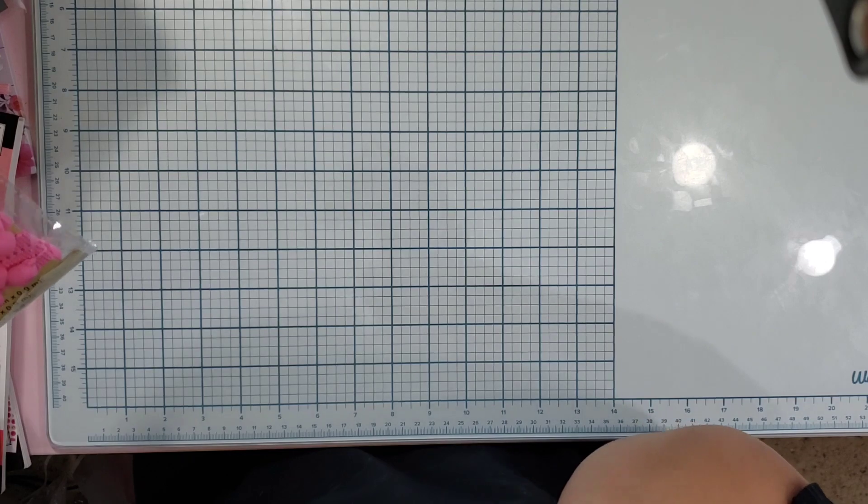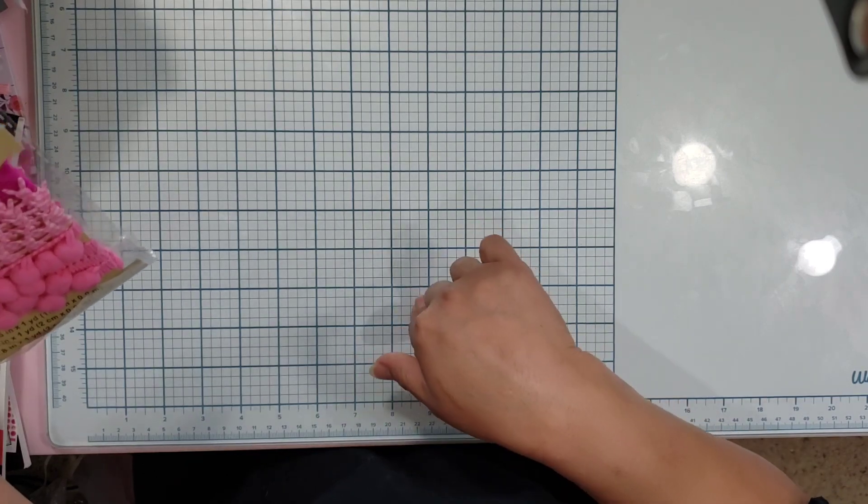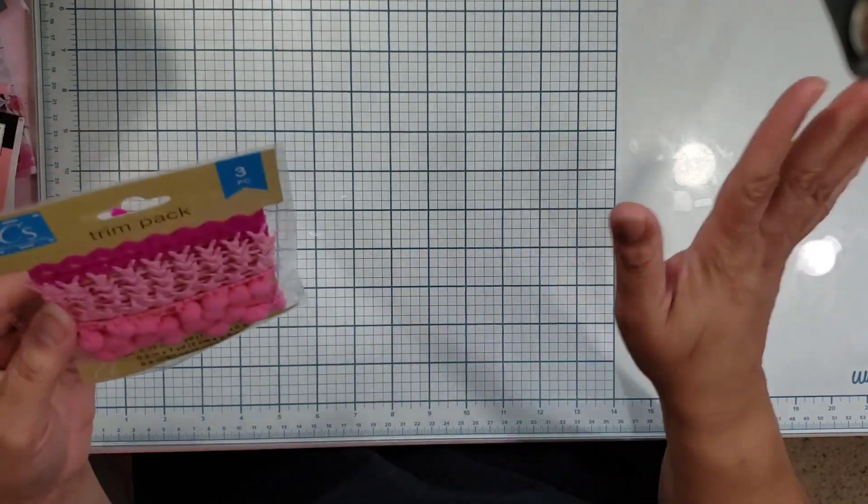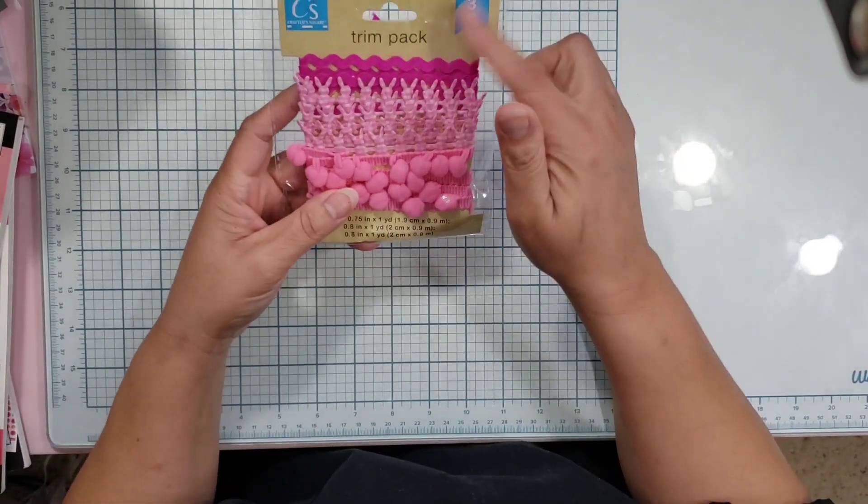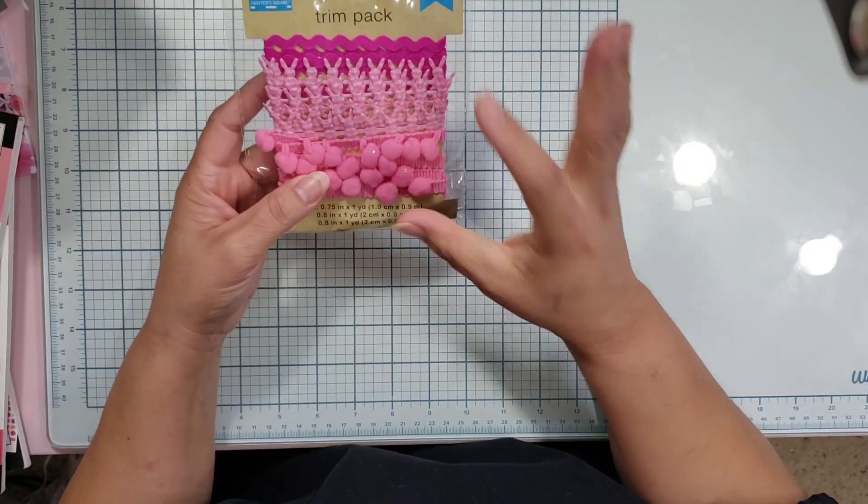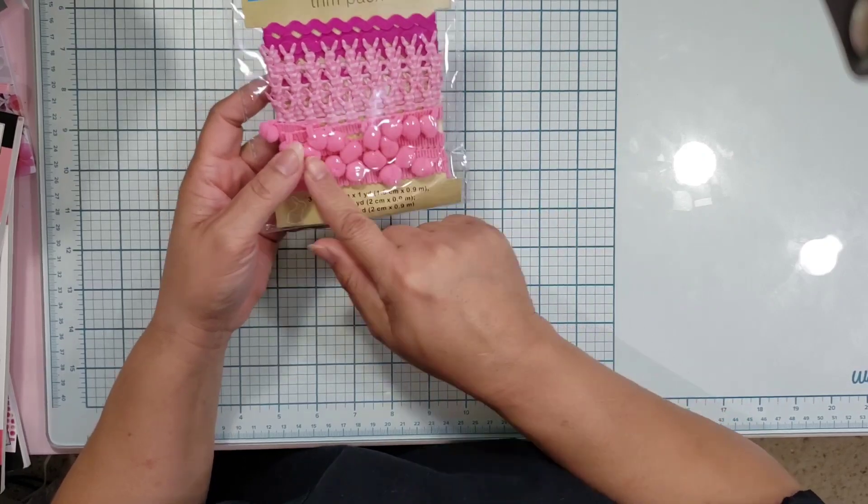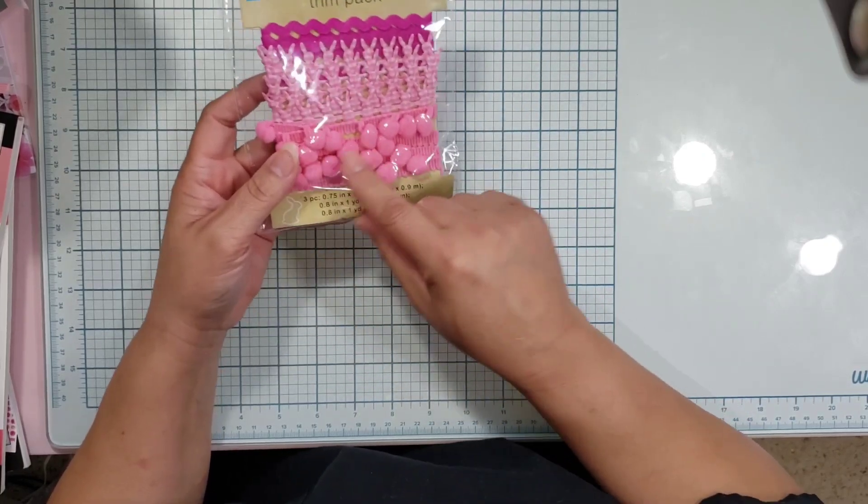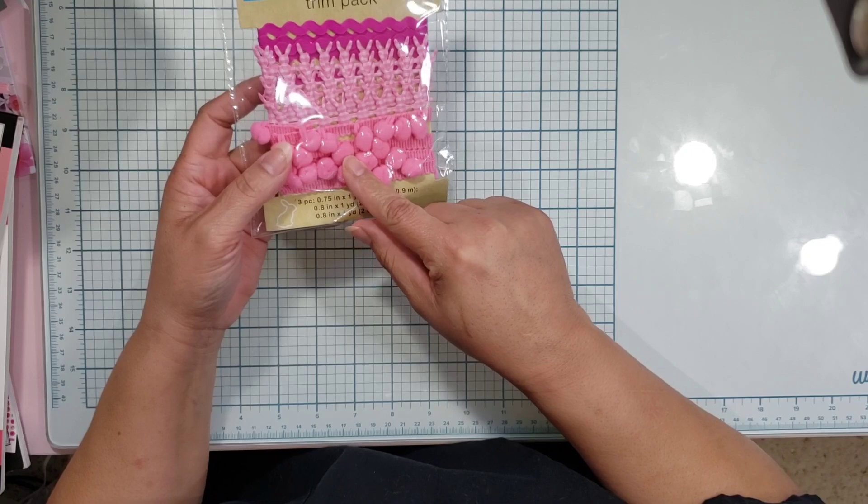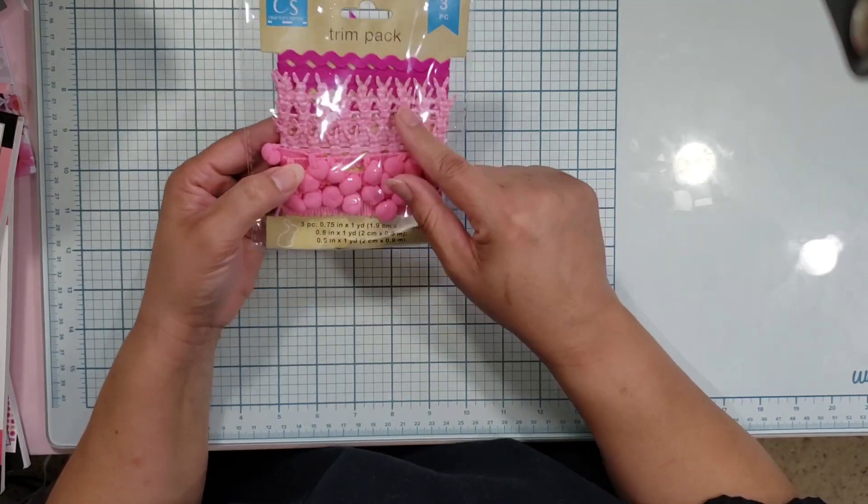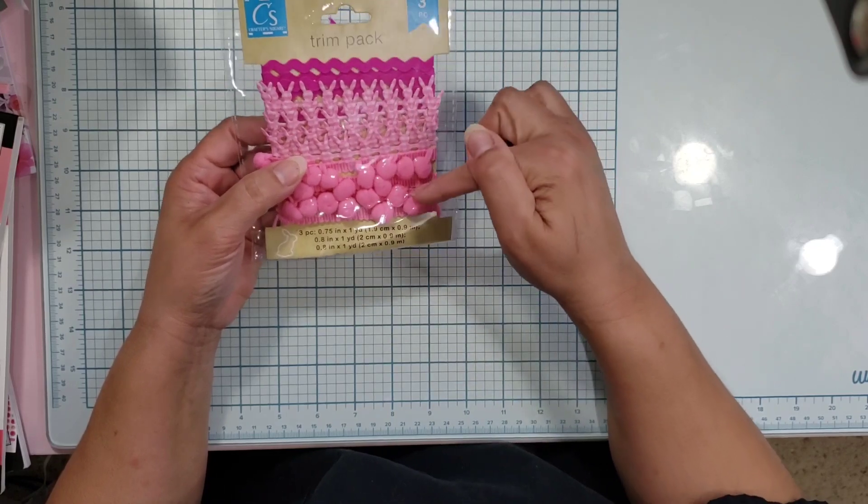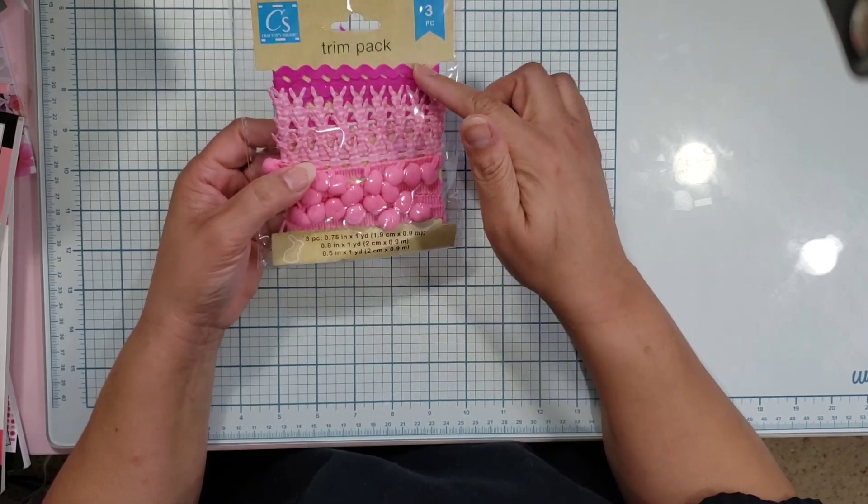This is definitely new this year. I don't remember it in years past, but if you guys do, let me know. It's the three-piece trim. Last year they had just the little pom-pom ones in different colors. This year, the three pack has the rick rack, the little bunny shapes, and the pom-poms.